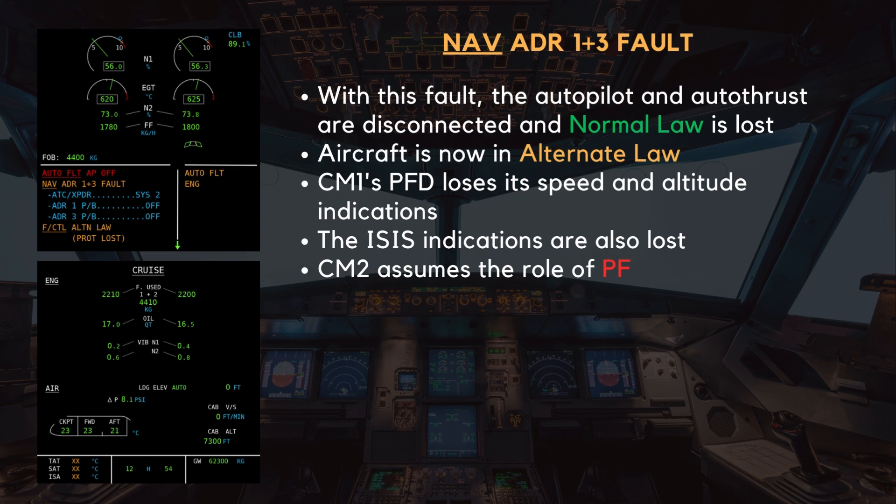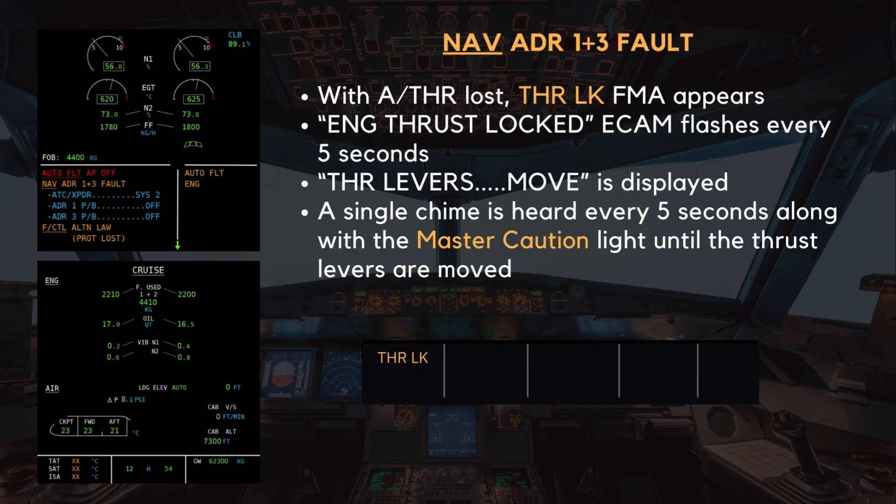CM1's PFD loses its speed and altitude indications. The ISIS indications are also lost. CM2 now assumes the role of PF, if they weren't already before. With the autothrust lost, the thrust-locked FMA appears.